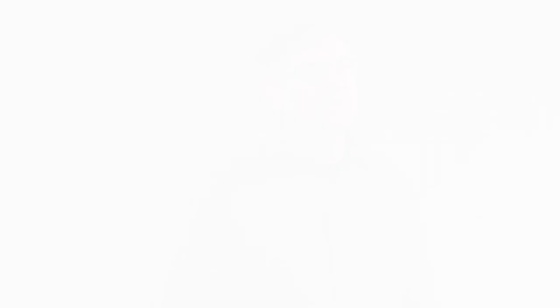Fortunately, that was addressed with the introduction of Vayu, followed by Raijin, and now Magnus running alongside Raijin. And then there's also the recent upgrade here.